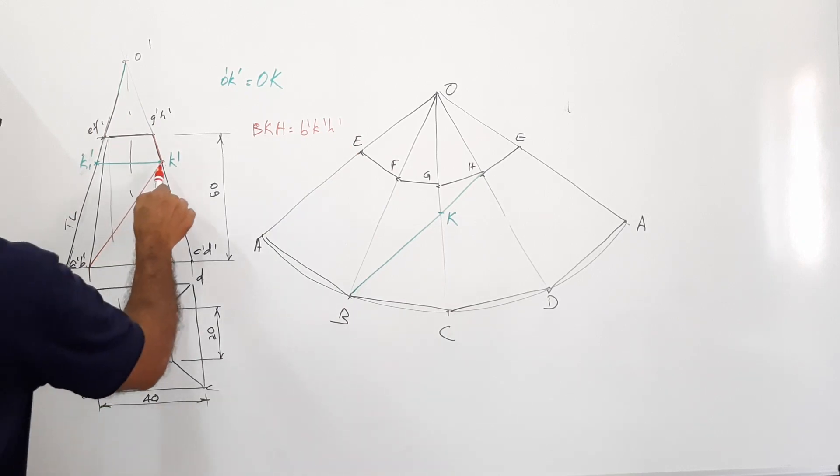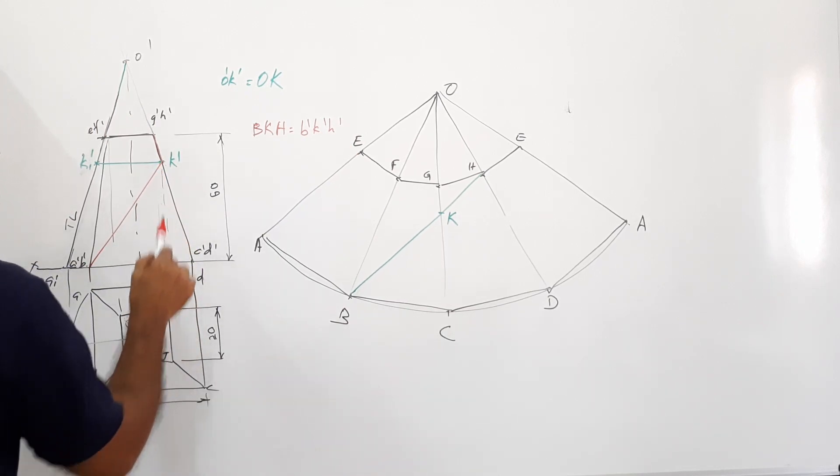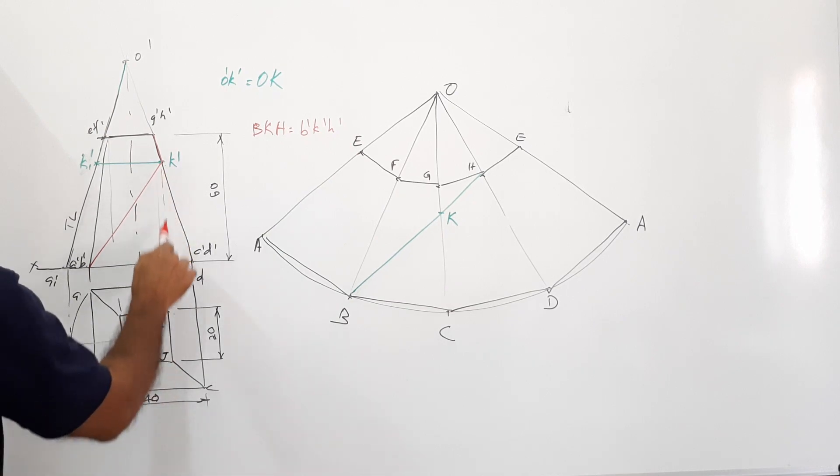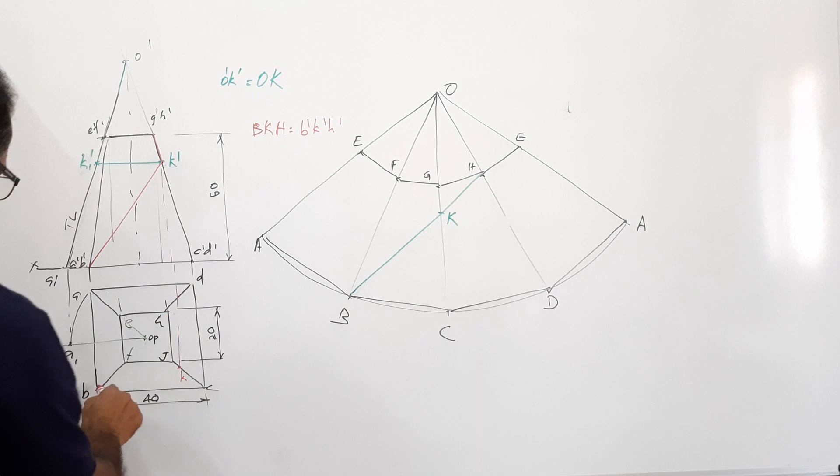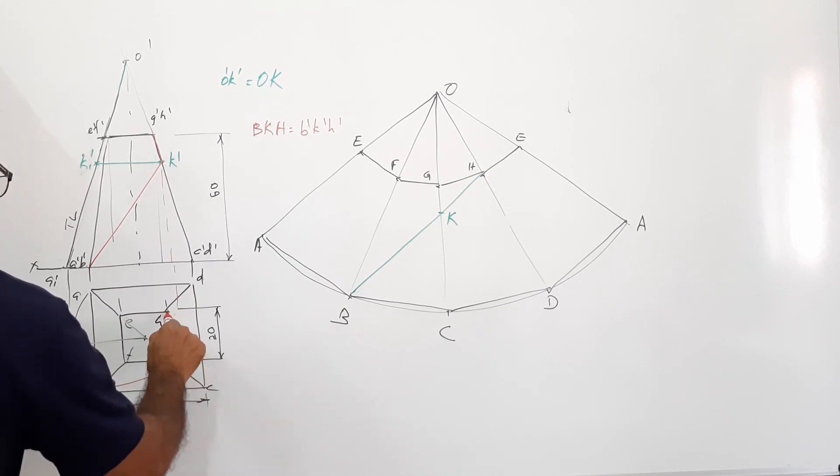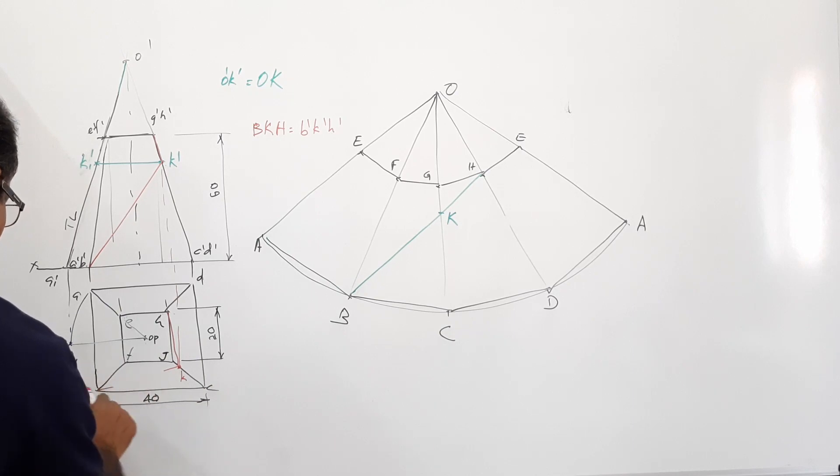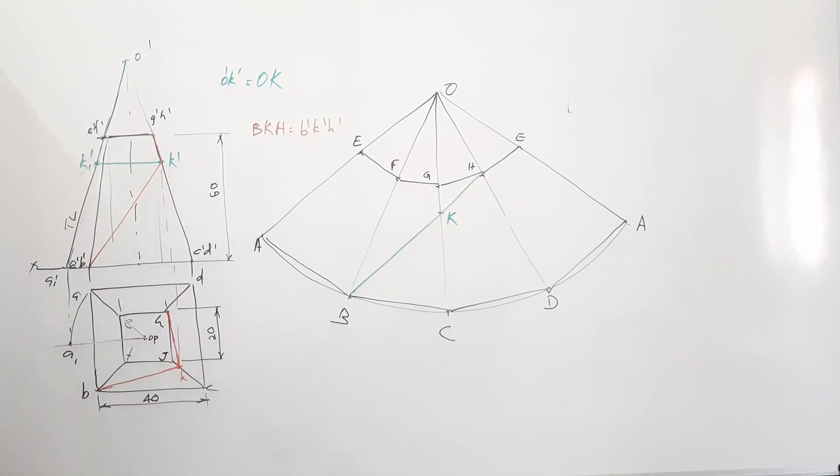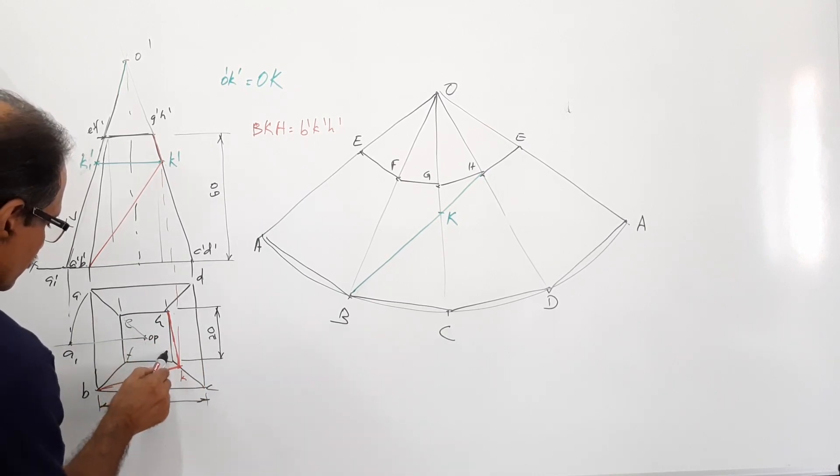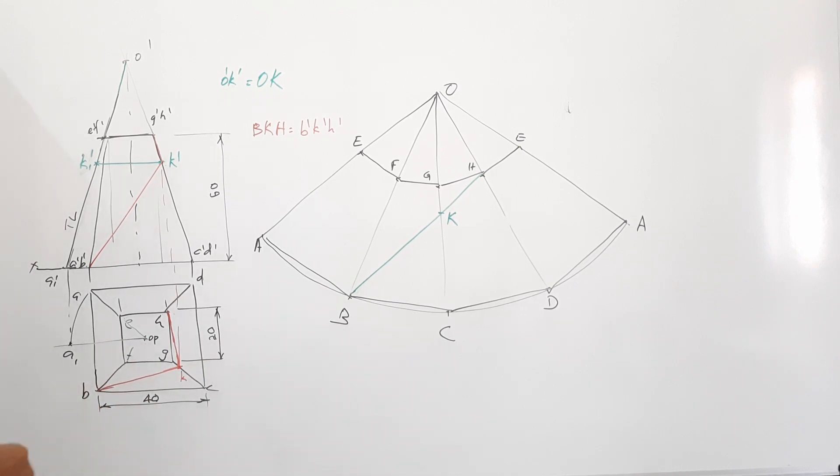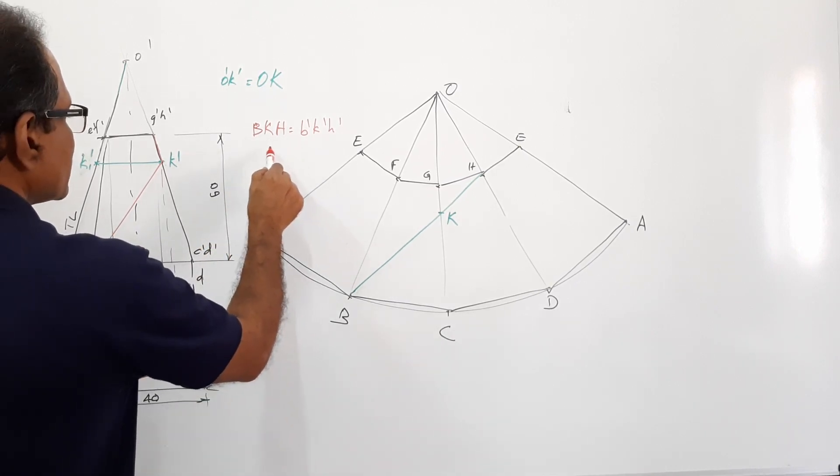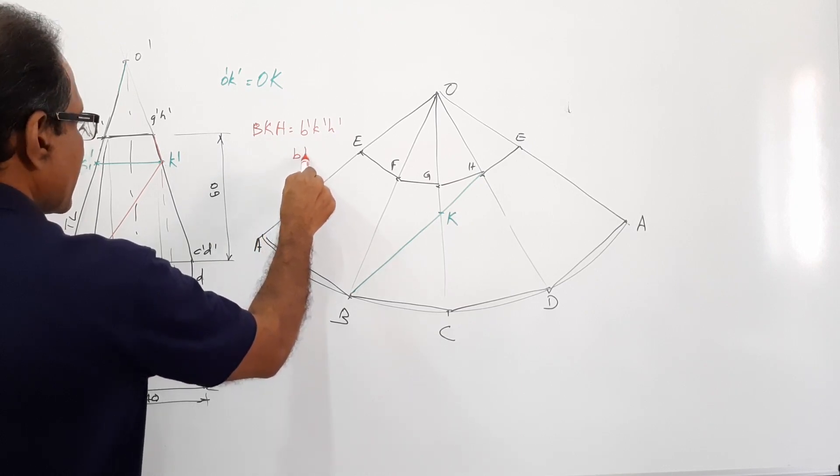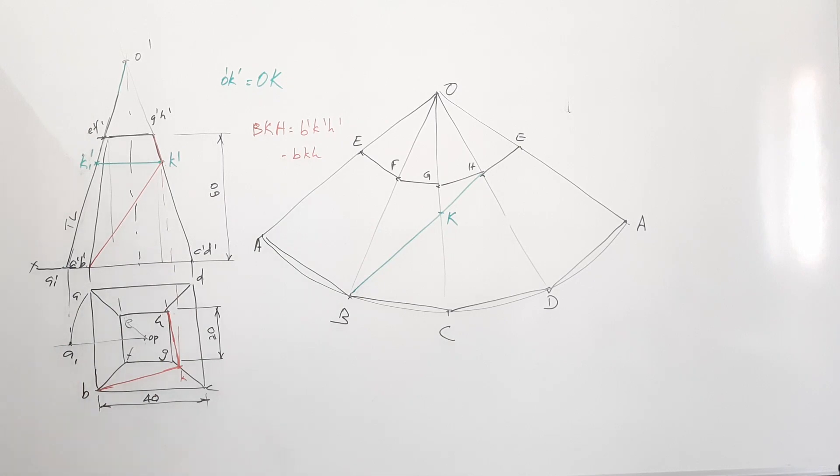What about the plan? Drop K dash down to GC. B, K, K, H is the plan. This is B, K, H in the plan. So this is B, K, H.